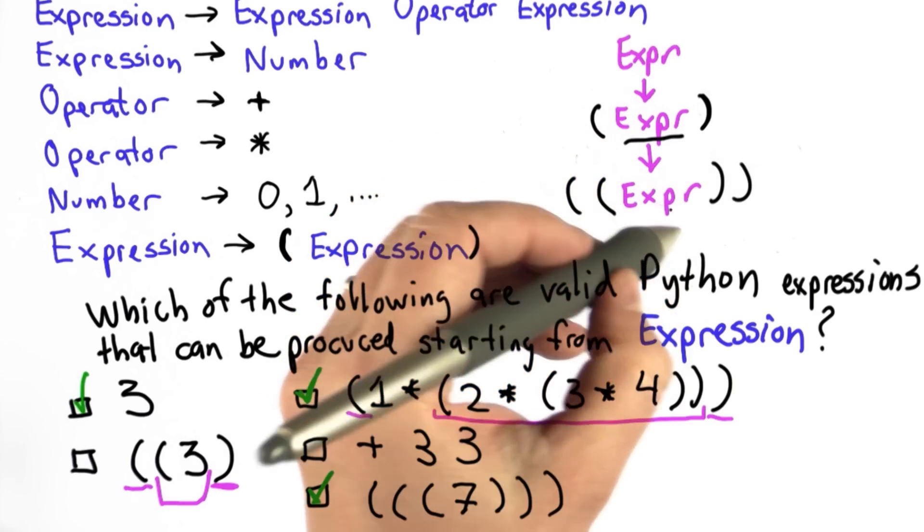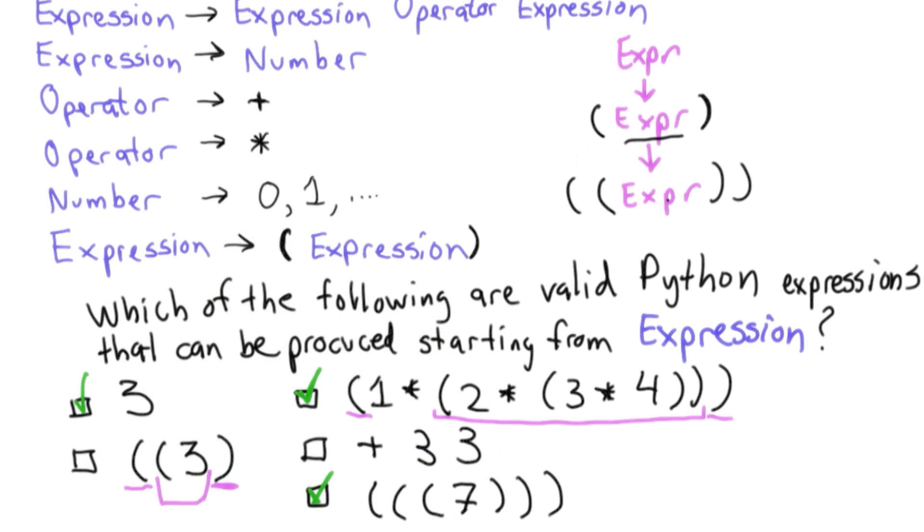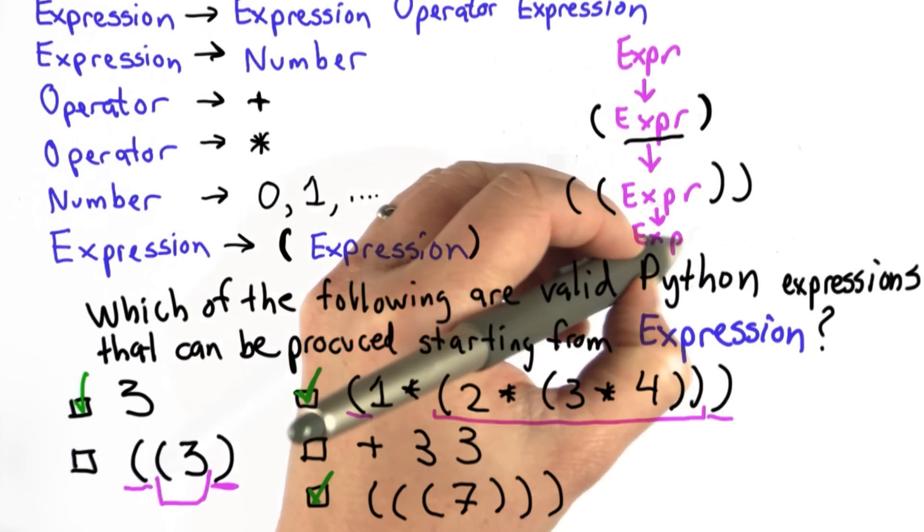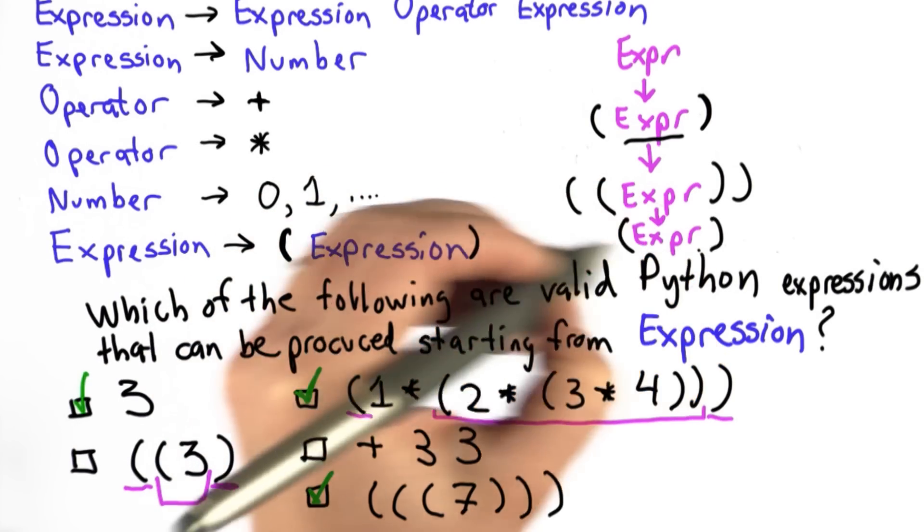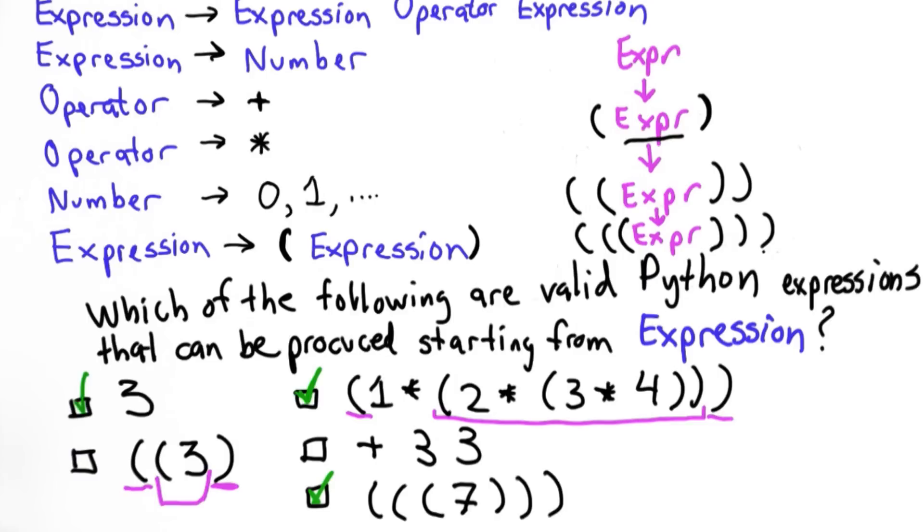We're going to replace the middle expression with expression paren expression. Replacing this expression with the last rule. That'll give us expression surrounded by parens, and we still have the two outer parens on each side. So we can have as many nested parens as we want. It's not necessary. It doesn't make a lot of sense. We would never actually want to write code that way. But it's still a valid Python expression.